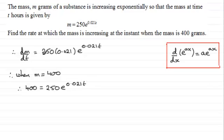Now I've got 250 e to the 0.021t up here, so we can see that that's going to be 400.